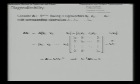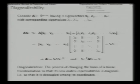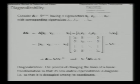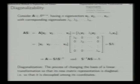If we post-multiply by S inverse, S cancels on the right and we get A = S·Lambda·S⁻¹, meaning A can be expressed as S·Lambda·S⁻¹ where Lambda is the diagonal matrix with eigenvalues at the diagonal locations. Similarly, pre-multiplying both sides with S⁻¹ gives S⁻¹·A·S = Lambda. The matrix A in the new basis S gets diagonalized, and this process of changing the basis of a linear transformation so that its new matrix representation is diagonal is called diagonalization.